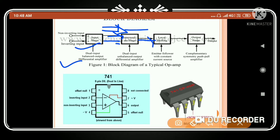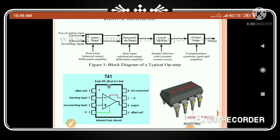After the intermediate stage comes level shifting with an emitter follower and constant current source, then the output stage where we get the desired output. This is the block diagram of the IC — a dual in-line (DIL) IC with eight-pin configuration, with four pins on each side.